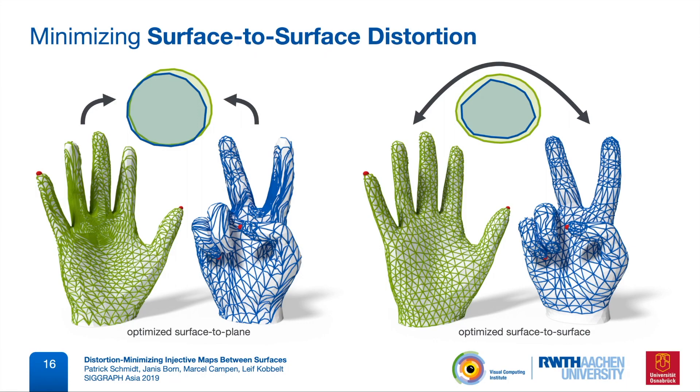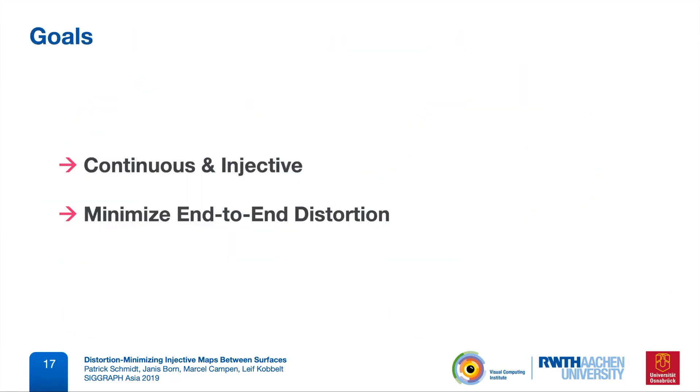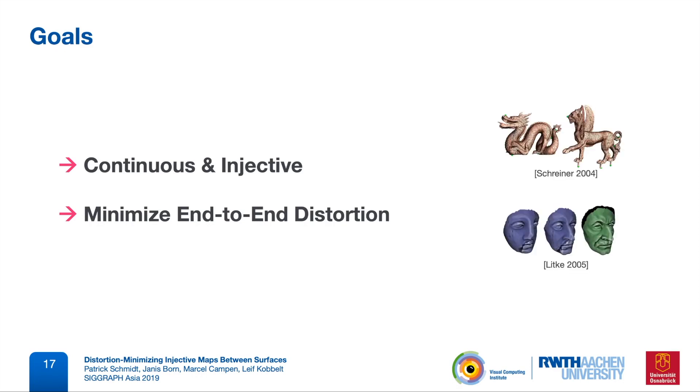So we want to have both properties. We want to strictly stay within the class of continuous and injective maps, and we want to minimize an end-to-end distortion measure. The existing literature in this problem setting is actually very brief. There are only two methods from about 15 years back that combine these two properties, and we'll compare to them in a minute.